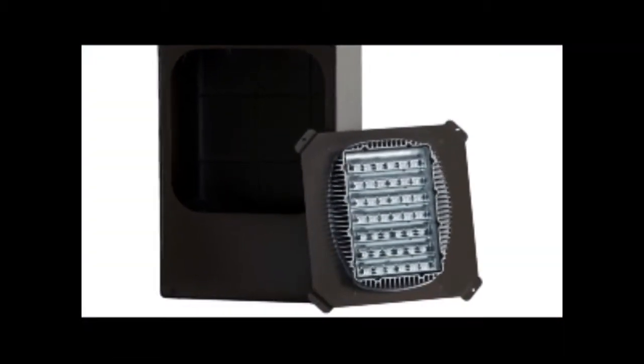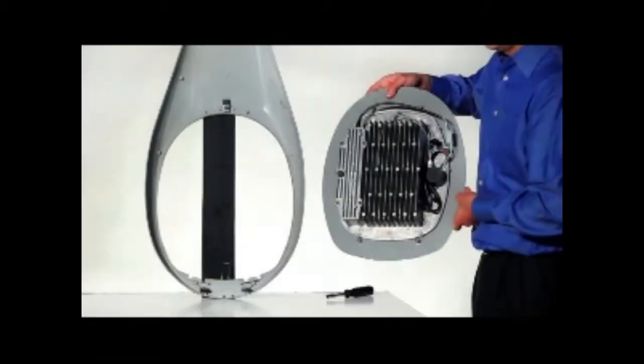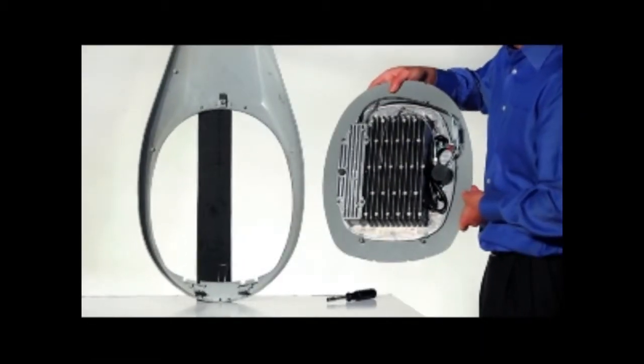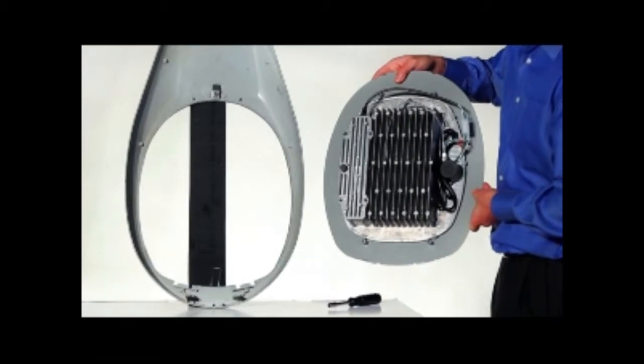Innovative Lighting has developed a number of mounting plates so the light engine can be installed in virtually every Cobra Head as well as many area and site luminaires. Here, we're demonstrating a light engine installation in a large Cobra Head housing which requires a simple adapter plate.